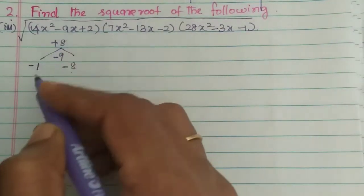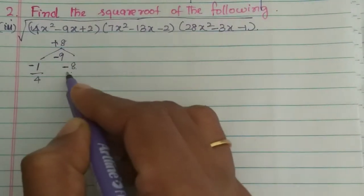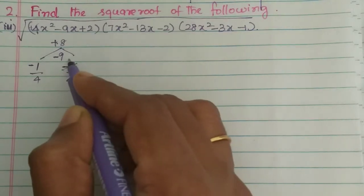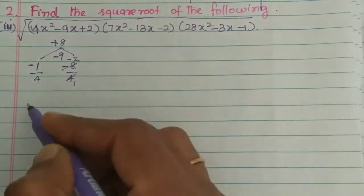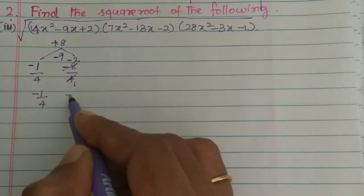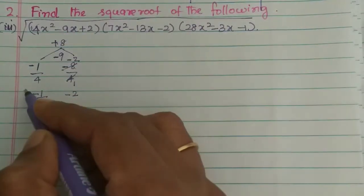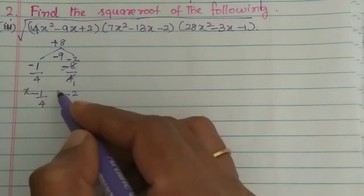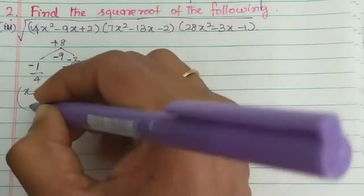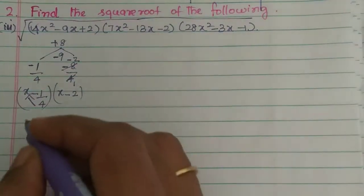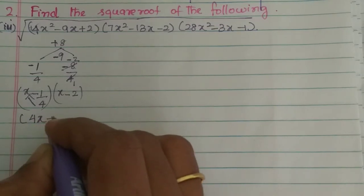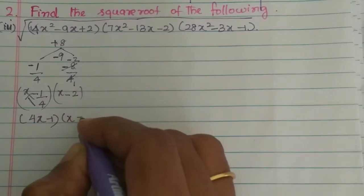Then we divide by the coefficient 4. So minus 1 by 4 gives minus 1/4, and minus 8 by 4 gives minus 2. Then we multiply back: 4x minus 1 into x minus 2.